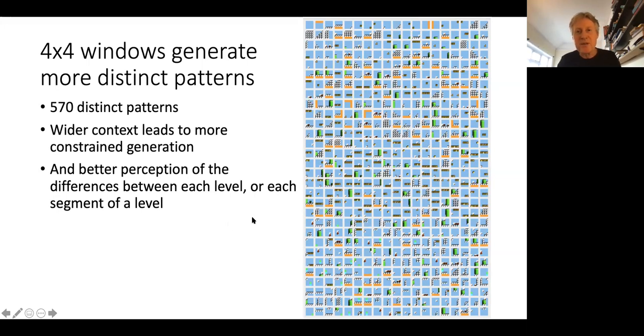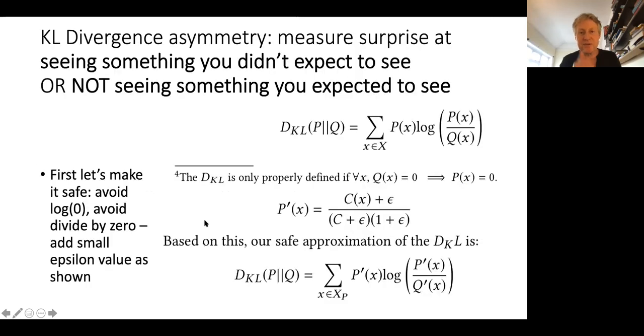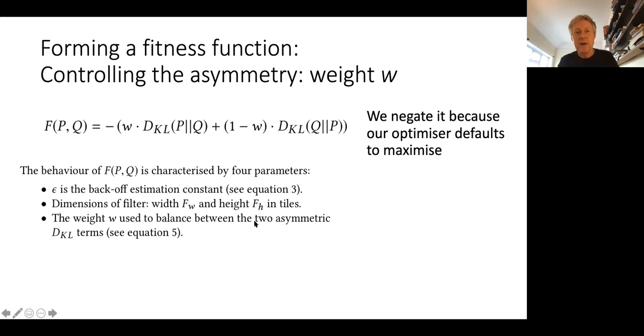The sky pattern is not surprisingly the most common - in that training strip it occurred 2100 times. The least frequent ones occur once or twice. If we observe four by four, we get 570 distinct patterns. Any questions? So the idea is we're now going to use evolution, we're going to mutate. We'll start off with a random set of tiles and use mutation to do it. I won't go into the maths - it's just standard KL divergence, nearly standard. We've got to fix it by avoiding divide by zero in certain cases. One of the cool things - because it's asymmetric, we can use a weight W to control.